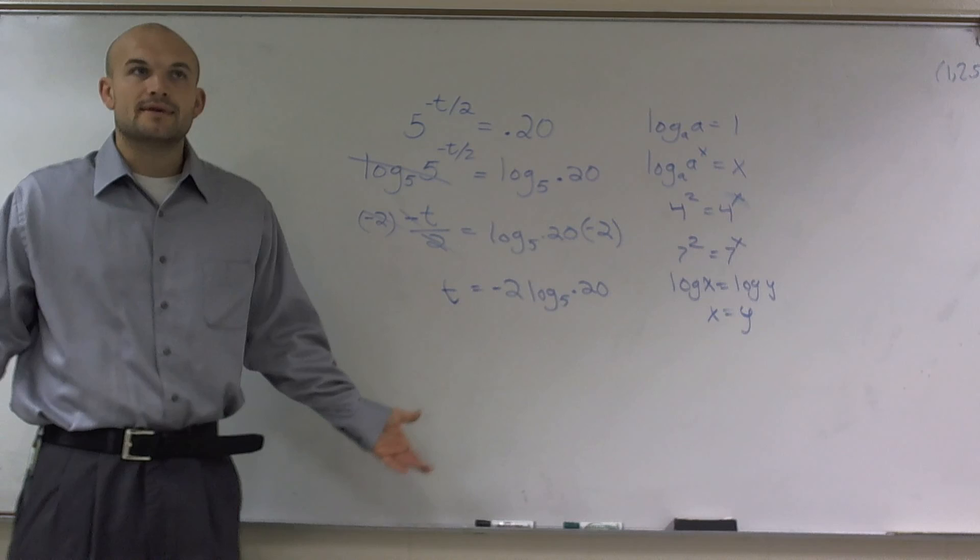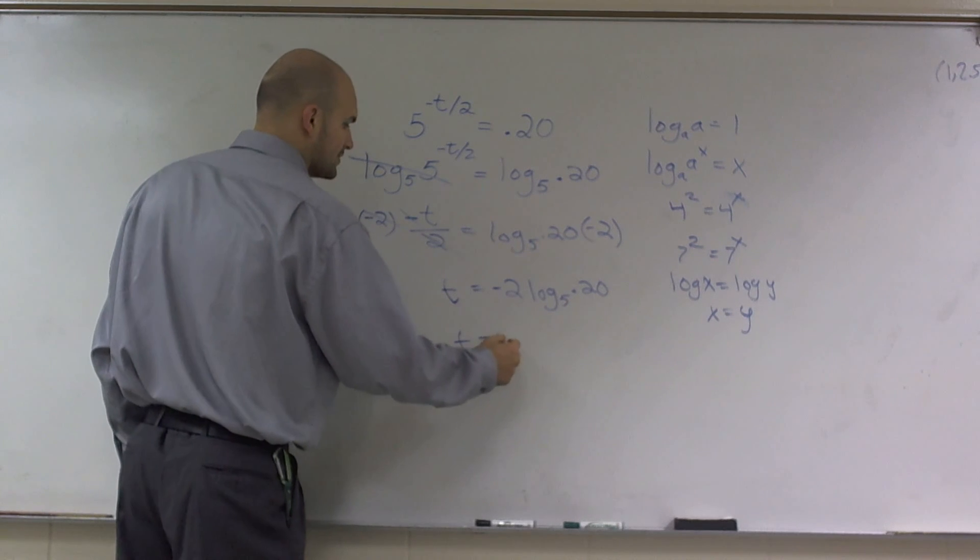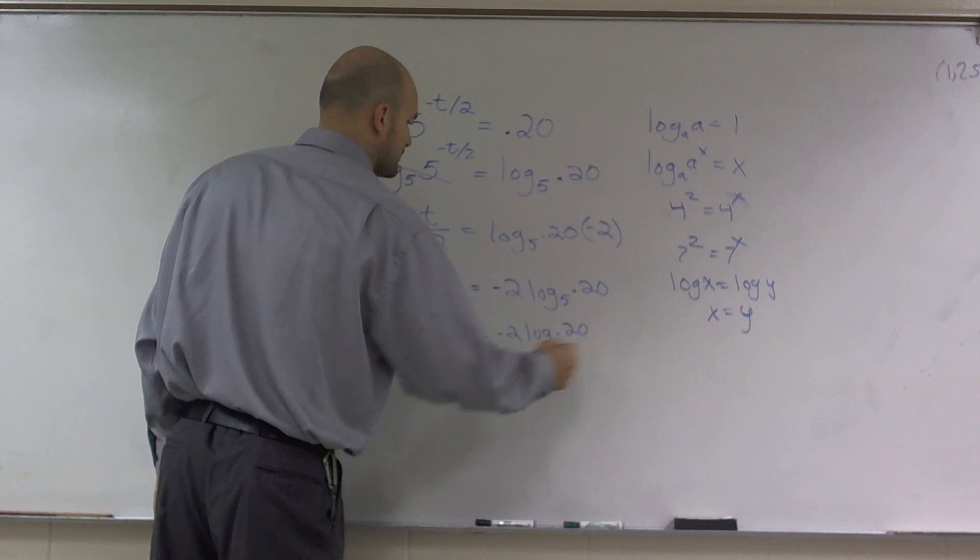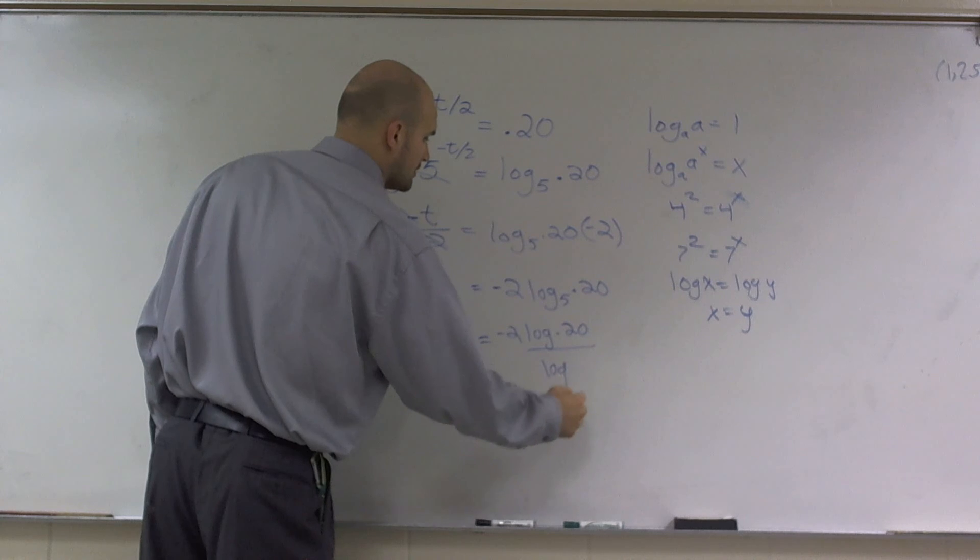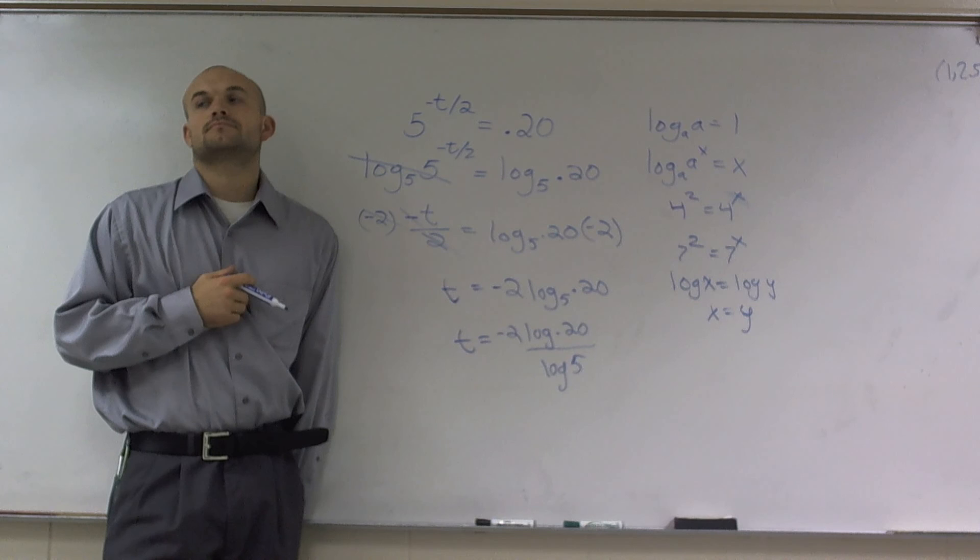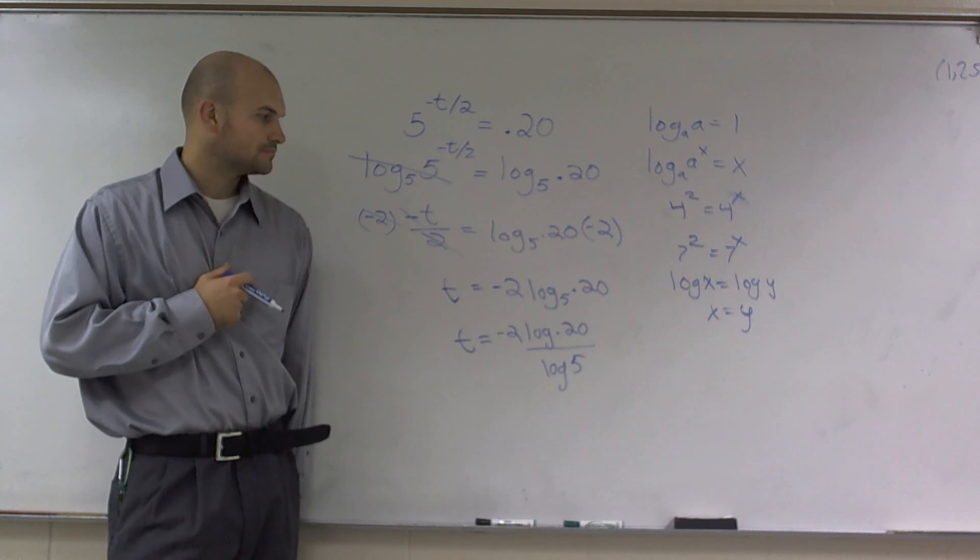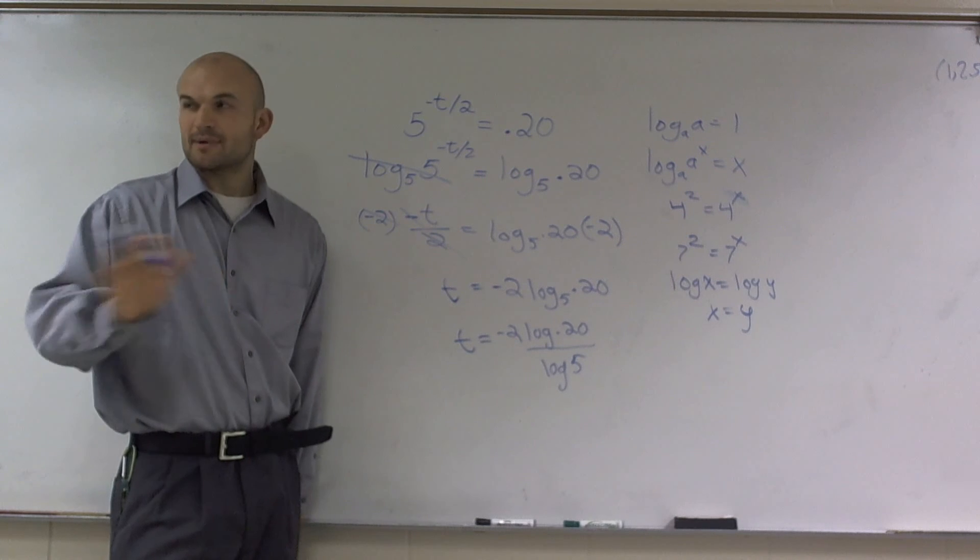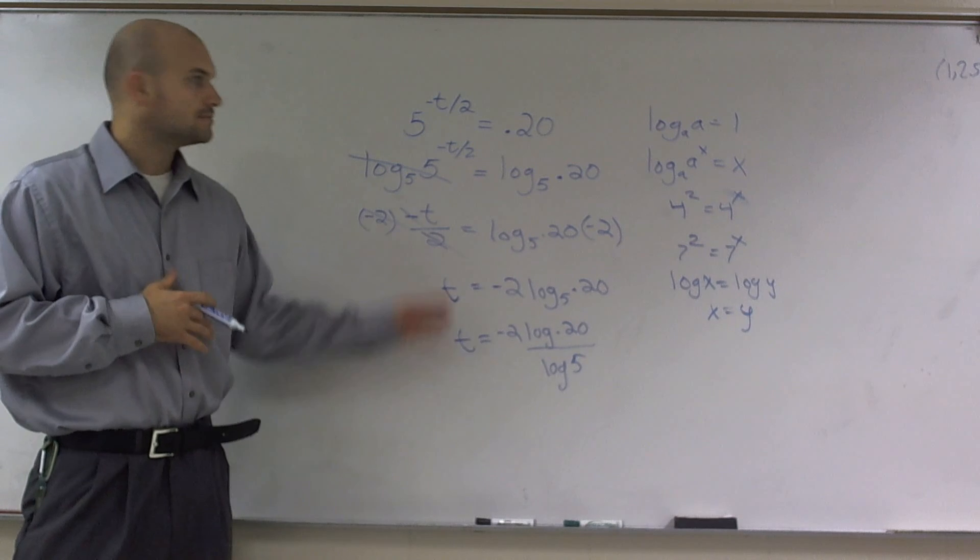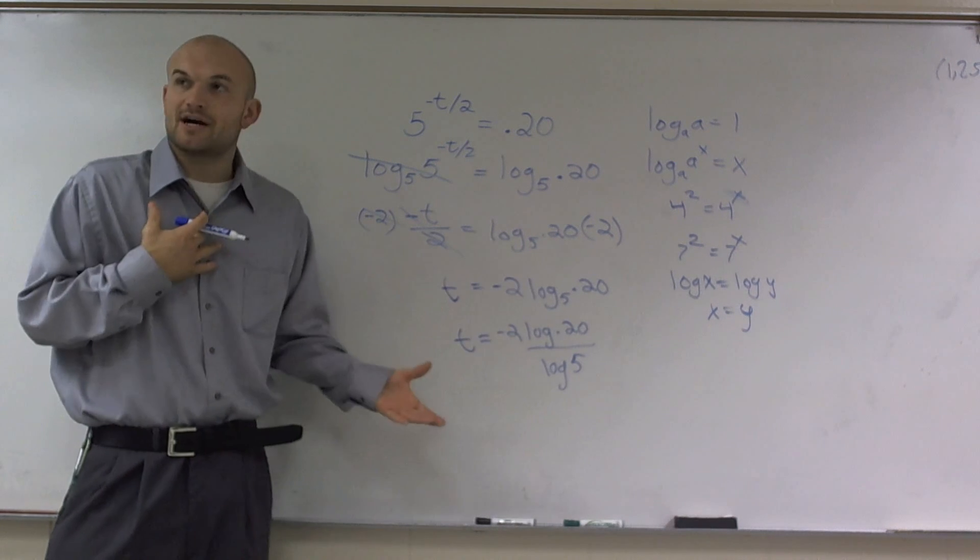All right? Now, if you guys are going to be calculating this by using your change of base form, you can do a negative 2 times log 0.20 over log of 5. I was just asking, would this be acceptable or this? But I don't have a calculator to find the approximate.